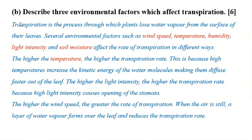Question B: describe three environmental factors which affect transpiration. This question carries six marks. To write this essay, you start by describing what transpiration is. Transpiration is the process through which plants lose water vapor from the surface of their leaves. There are several factors that affect transpiration, such as wind speed, temperature, humidity, light intensity, and soil moisture.